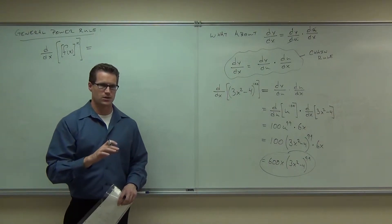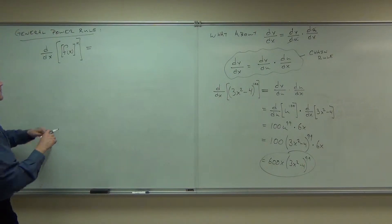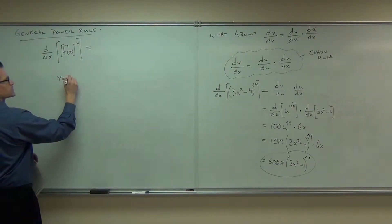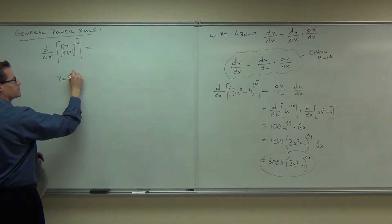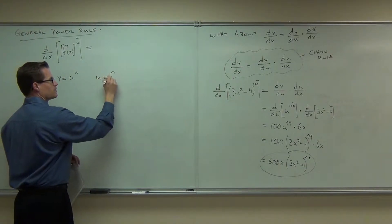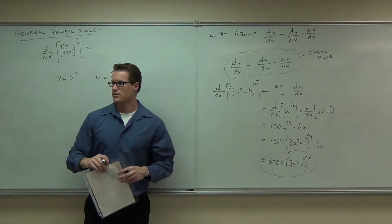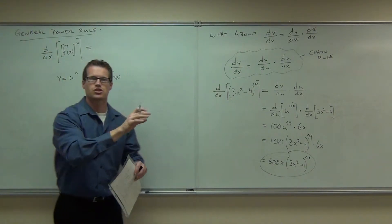I can show it to you if you really want me to. This is what would happen. You'd say, okay, what's my function? You'd say y equals u to the n, where u would equal f of x. You follow still? That's what the chain rule would say.